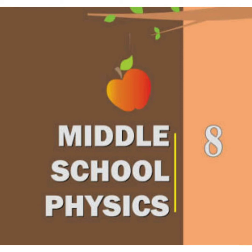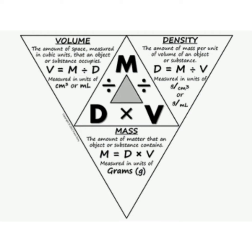Good morning dear students, welcome back to online class. In the previous class we learned about density. The density of a substance is defined as its mass per unit volume. The SI unit for density is kilogram per meter cube.